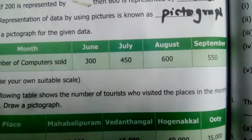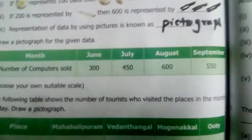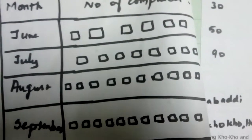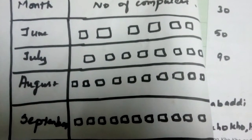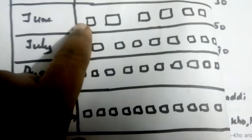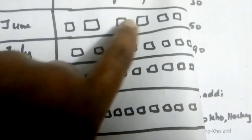Then how many computer pictures do I draw for each month? For the month of June it is 300, and since each picture is 50, we count: 50, 100, 150, 200, 250, and 300 — so six computer pictures for June.